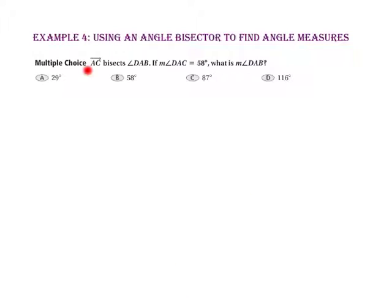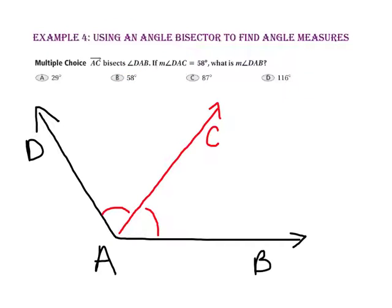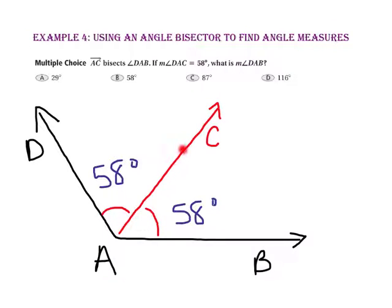Example 4: ray AC bisects angle DAB. If the measure of angle DAC is 58 degrees, then angle CAB must also be 58 degrees, since an angle bisector creates two congruent angles. So the measure of angle DAB is 116 degrees, making the answer choice B.